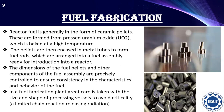Fuel fabrication is the next step. Reactor fuel is generally in the form of ceramic pellets, formed from pressed uranium oxide which is baked at high temperature. The pellets are then encased in metal tubes to form fuel rods, which are arranged into a fuel assembly ready for introduction into the reactor. The dimensions of fuel pellets and other components are precisely controlled to ensure consistency in the characteristics and behavior of the fuel. In a fuel fabrication plant, great care is also taken with the size and shape of processing vessels to avoid criticality.